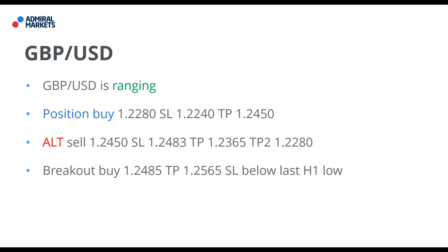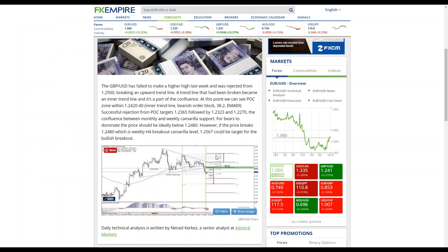If GBPUSD gets down to 1.2280, we could probably see a nice takeoff because historically there has been good buying from that spot. We will probably get into a sell position. I did the Forex Empire analysis today — that was part of the agreement we have with Forex Empire, and we are always providing them with exclusive analysis. I did a GBPUSD analysis and I will be looking to sell very soon. My stop loss here is very tight because we have a potential buy breakout. This is my Forex Empire analysis.